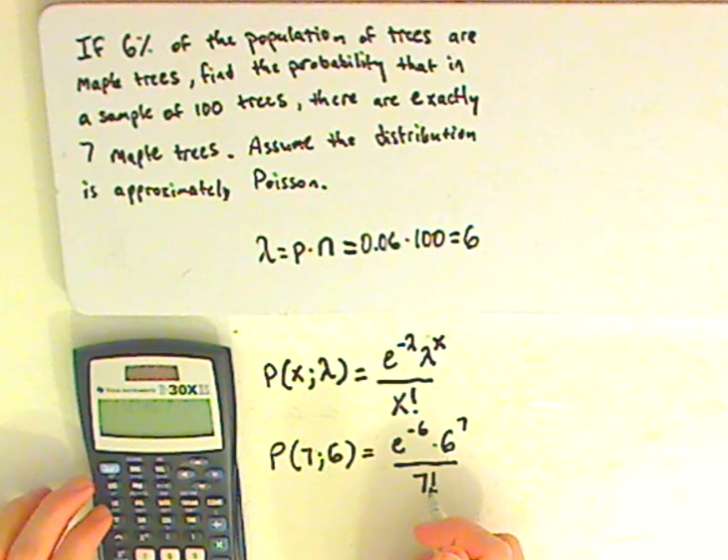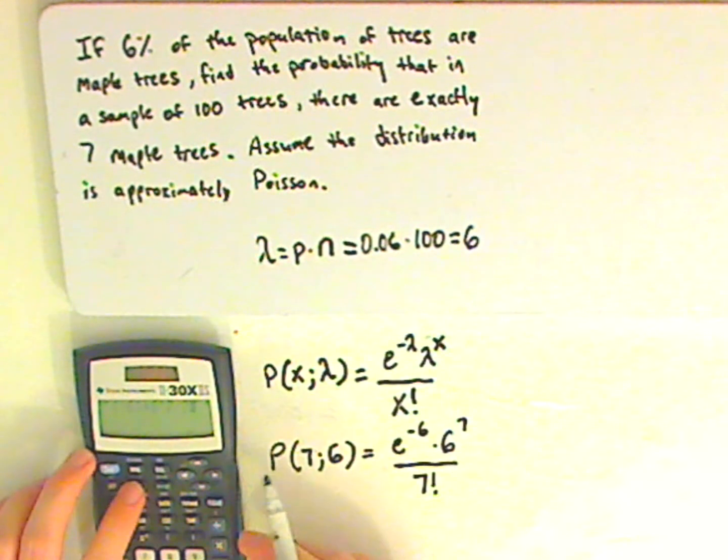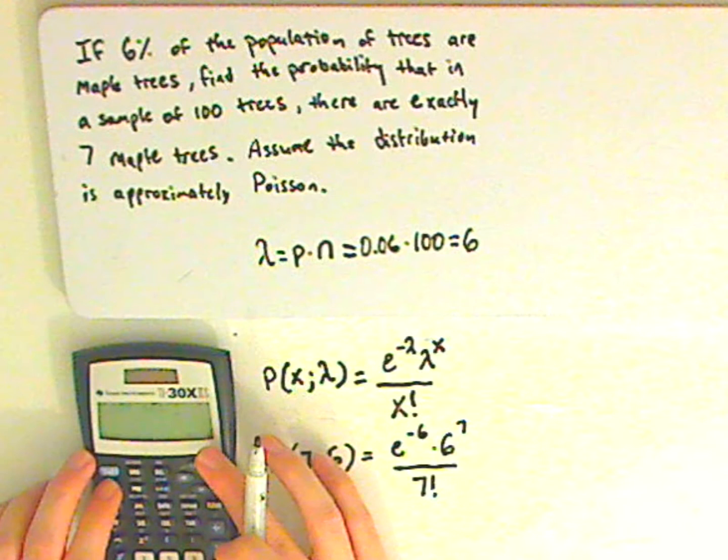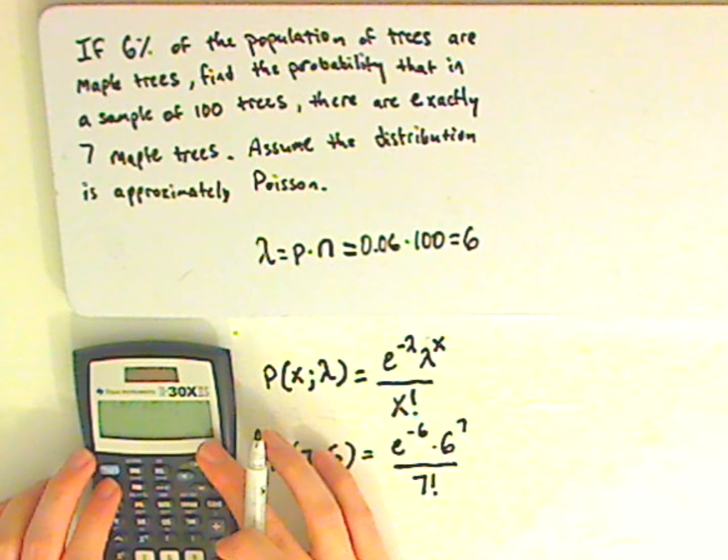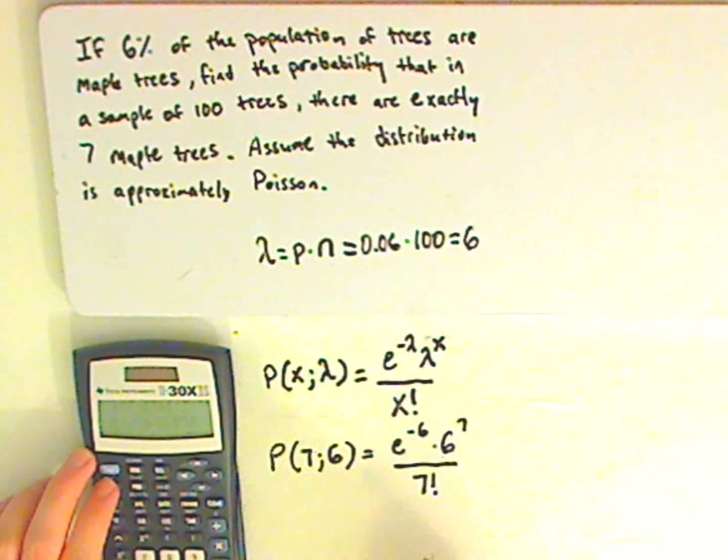Now, how do you get the factorial? Under prob, PRB, so go to PRB, go to exclamation point, which is the factorial, push enter, and then push enter again.